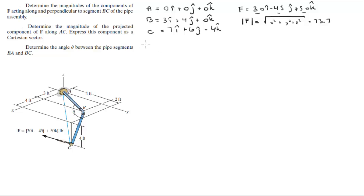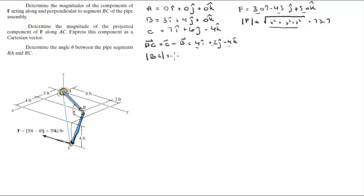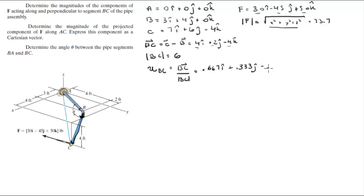Now that we have all these values, we can find vector BC — the vector going from B to C. It can be found by doing position vector C minus position vector B, and it comes out to be 4i + 2j − 4k. The magnitude of this vector comes out to be 6 — a nice round number. So the unit vector BC can be found by dividing vector BC by its magnitude, which gives us 0.667i + 0.333j − 0.667k.